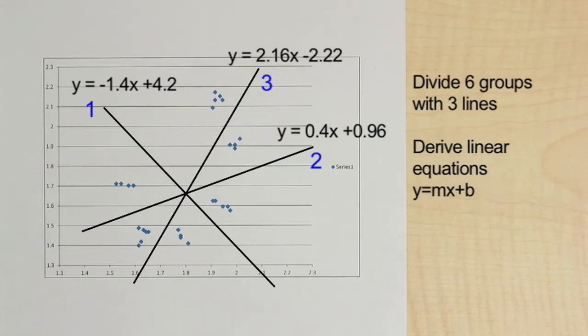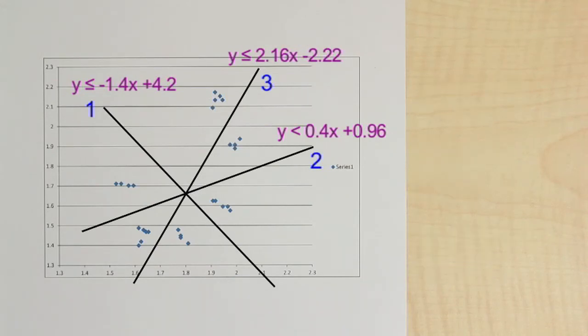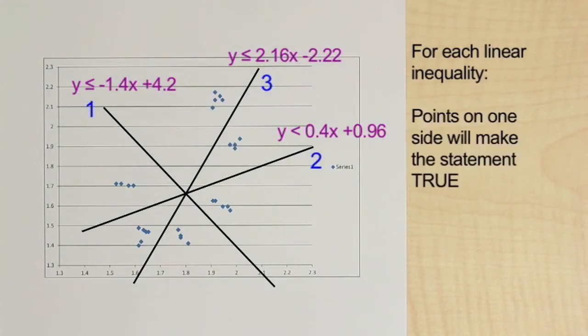Then by changing each linear equation into a linear inequality, we now have three tests we can use to evaluate a new data point and determine which color we have. For each linear inequality, a point on one side of the line will make the statement true. A point on the other side of the line will make the statement false.